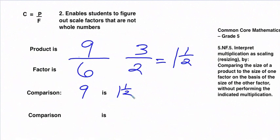If we were to do another example, let's say we reverse it, and we're comparing 6 to 9. So then if we do some simplification, this will simplify to 2 over 3. So the comparison here is that 6 is 2 thirds as big as 9.